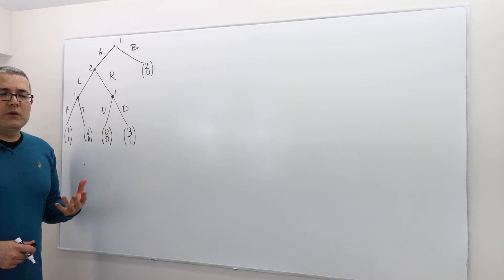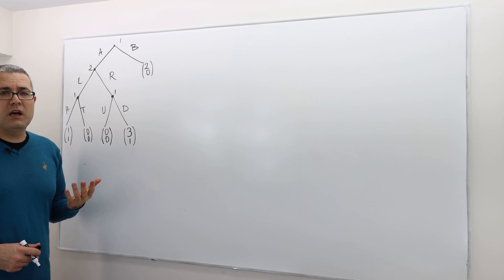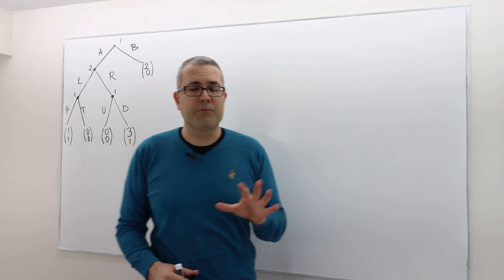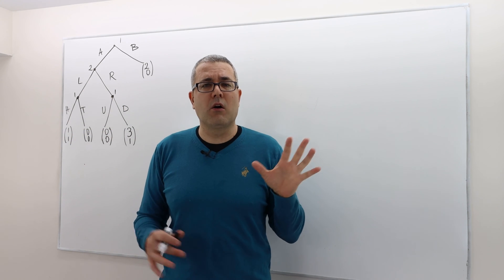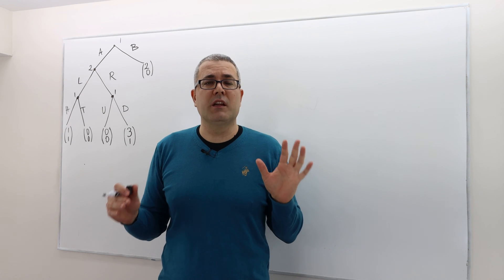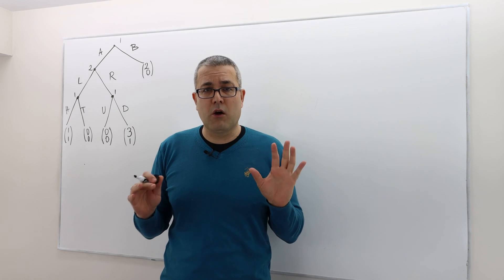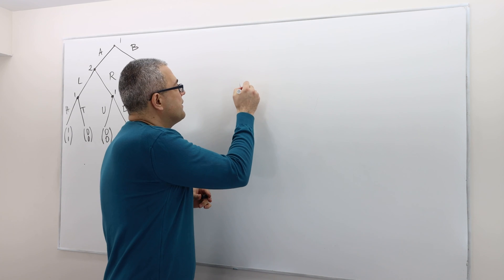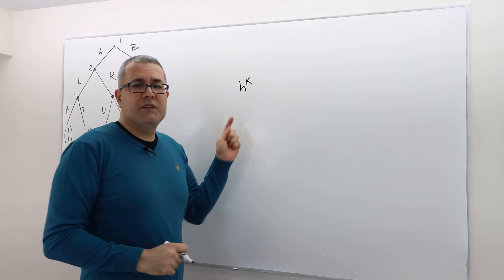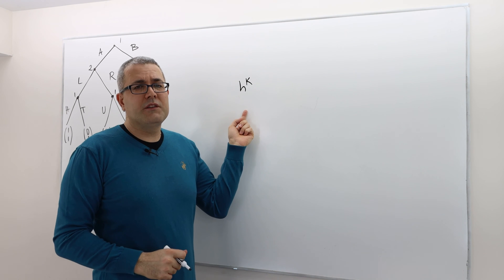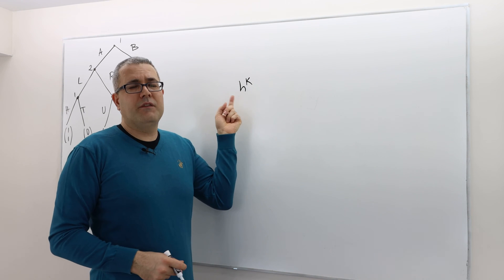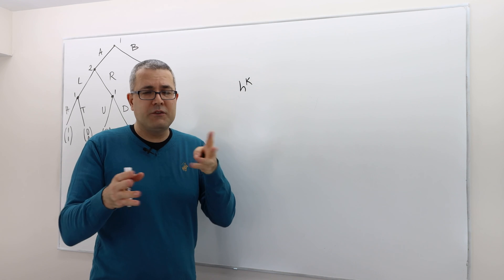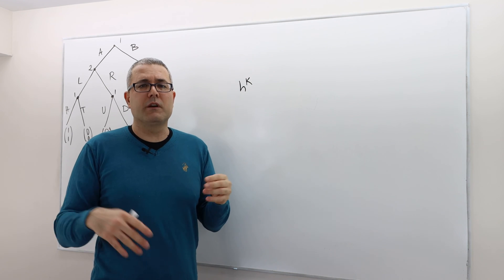So what do we do? We use backward induction. The idea is simple: look at the longest non-terminal history — let's call it history H_K. It is the longest non-terminal history, meaning after H_K somebody is going to make a move, choose an action, and then the game will be over.